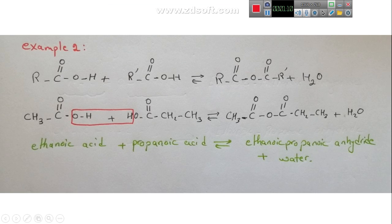And, the second example about the mixed anhydride. Here, we have a carboxylic acid and another carboxylic acid, but not similar carboxylic acids. This is ethanoic acid, and this is propanoic acid. As you know, intermolecular dehydration includes the elimination of OH here, and the H here to form water. The rest of the compounds here and here are combined to give a mixed anhydride.